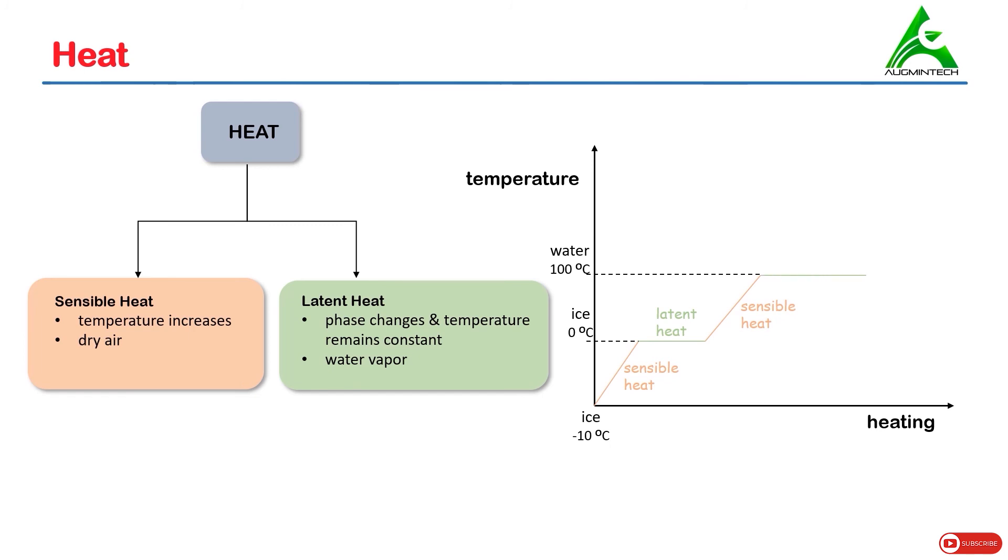On heating water at 100 degrees centigrade, its temperature does not change. Instead, it starts getting converted to steam at 100 degrees centigrade. Now the phase of water which is liquid is getting changed to vapor. So this is known as latent heat.